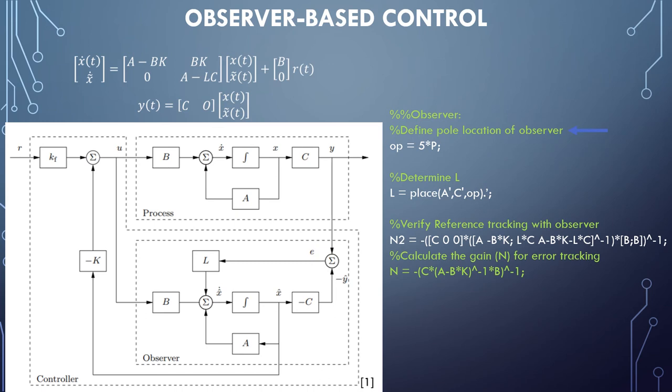Ideally, we'd like the observer to operate faster than the actual system, so a good place to start is to place the poles two to five times more negative than the controllers. Realistically, the poles could be more or less negative than the five times chosen here. The problem with faster responses is that they could be more susceptible to noise. Once the location of the poles is determined, the place function is used to calculate the estimator gain.